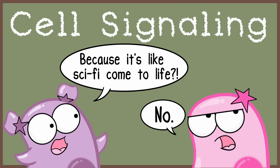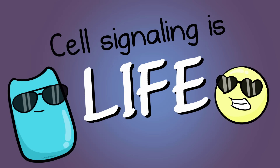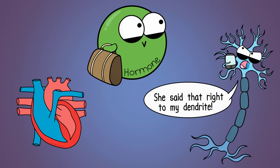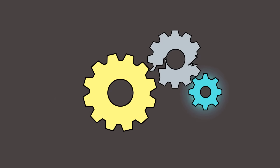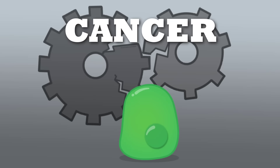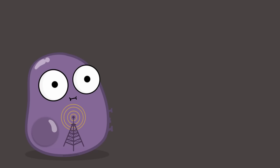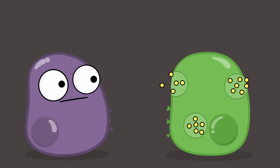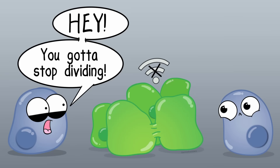In summary, why do we care about cell signaling? Your body processes that keep you alive rely on your cells' ability to signal. From the regulation of your heartbeat to hormone signals traveling long distances to the way neurons in your brain communicate, your multicellular self needs cell signaling. There are also many disorders where cell signaling does not work as it should. Cancer is one example — a cancer cell could produce too much of its own growth factor through autocrine signaling, causing excessive cellular division, and cancer cells can have many other cell signaling difficulties.